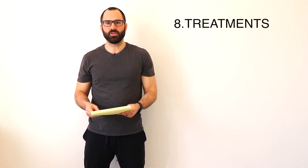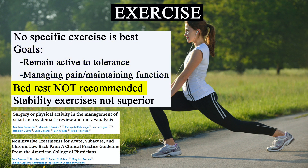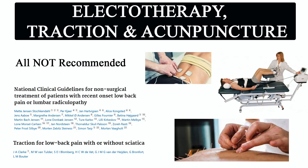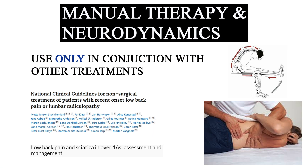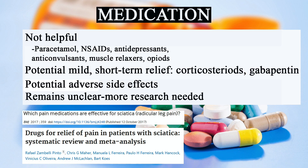What does the evidence say about the different treatment options for sciatica? First, for exercise, a systematic review by Fernandez et al. in 2015 found that no specific exercise was superior to others and that managing pain and maintaining function were the primary outcomes. Two important things to note: bed rest is not recommended, and stability exercises are not superior to other exercises for this condition. For electrotherapies and traction — both continuous and intermittent — a Cochrane review by Clark et al. as well as the NICE guidelines do not recommend this for the treatment of sciatica. For neurodynamics and manual therapy, they should be used in conjunction with other treatments but not as a standalone treatment, per Hidalgo et al. in 2014. For medications, a systematic review by Pinto et al. in 2012 found that paracetamol, NSAIDs, antidepressants, anticonvulsants, muscle relaxers, and opiates were not helpful in the management of sciatica pain.